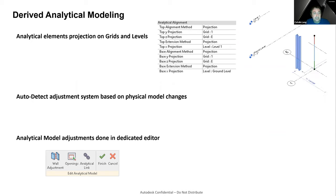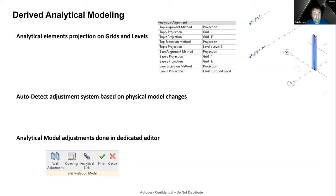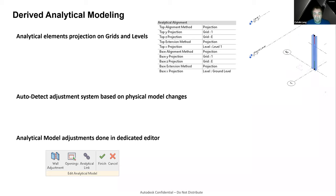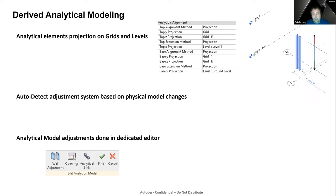Also, the analytical elements' projection on grid and level can be manually defined, but it is sometimes not feasible for each element in the model to have these settings. In the current solution we have an auto-detect adjustment system based on physical model changes, which sometimes results in strange situations — like you move a physical element on one side and a position on another side of the building changes. Most of these adjustments can only be done inside the analytical model editor environment.